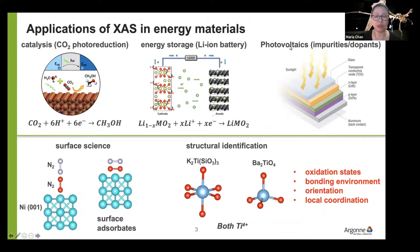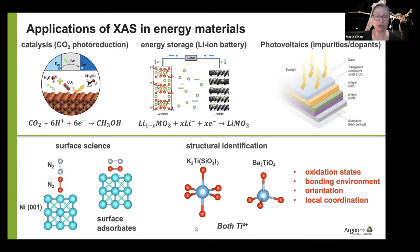We may be well familiar with the use of X-ray absorption to look at chemical changes and local environment changes in energy storage materials and catalysis. But in photovoltaics, it's also an emerging area to look at impurities and dopants using XAS. XAS is good for structural identification such as oxidation state, bonding environment, orientation, and local coordination, but also — a much more tricky experiment — determination of surface adsorbates and their local environment, which is particularly important in catalysis.